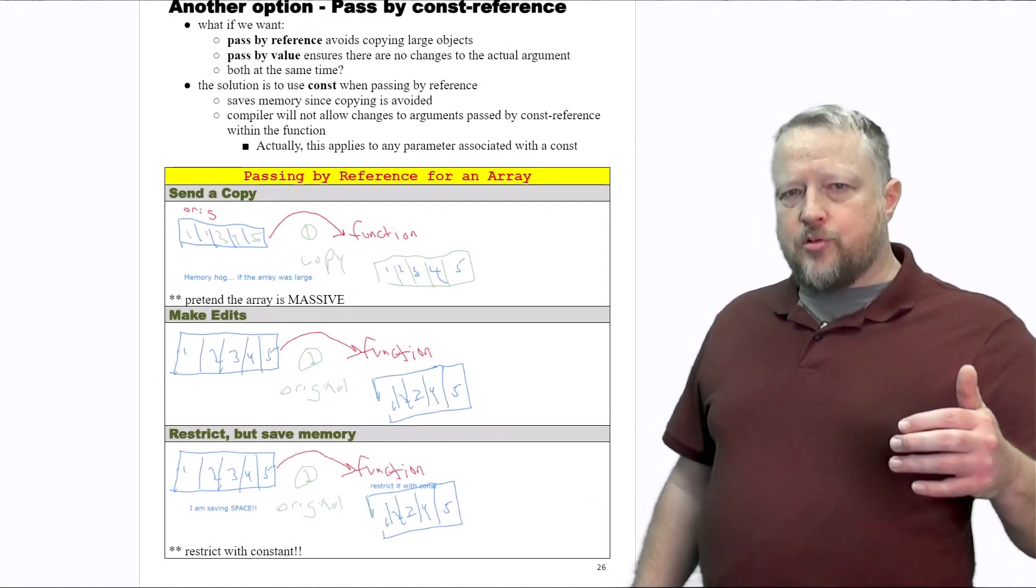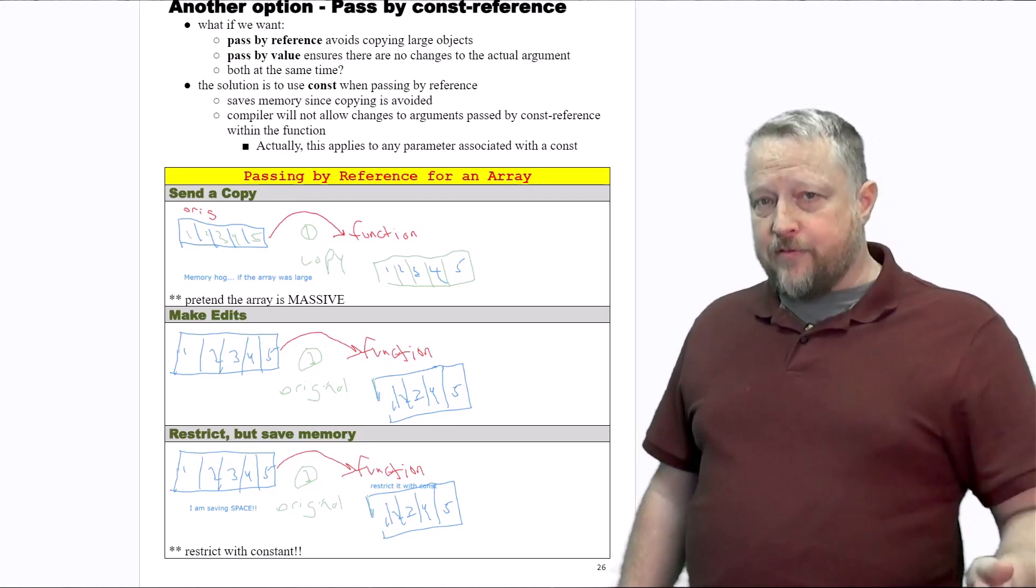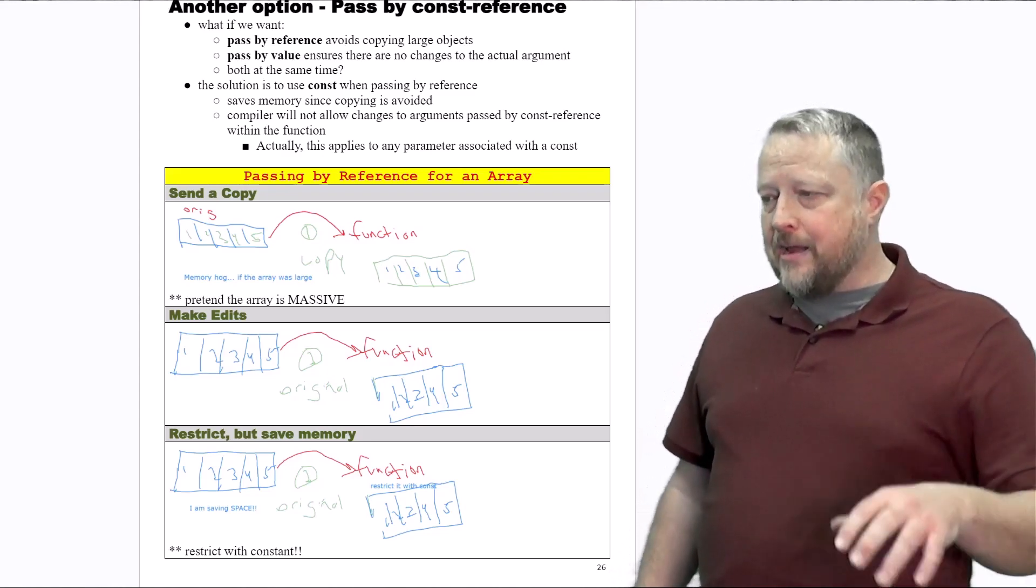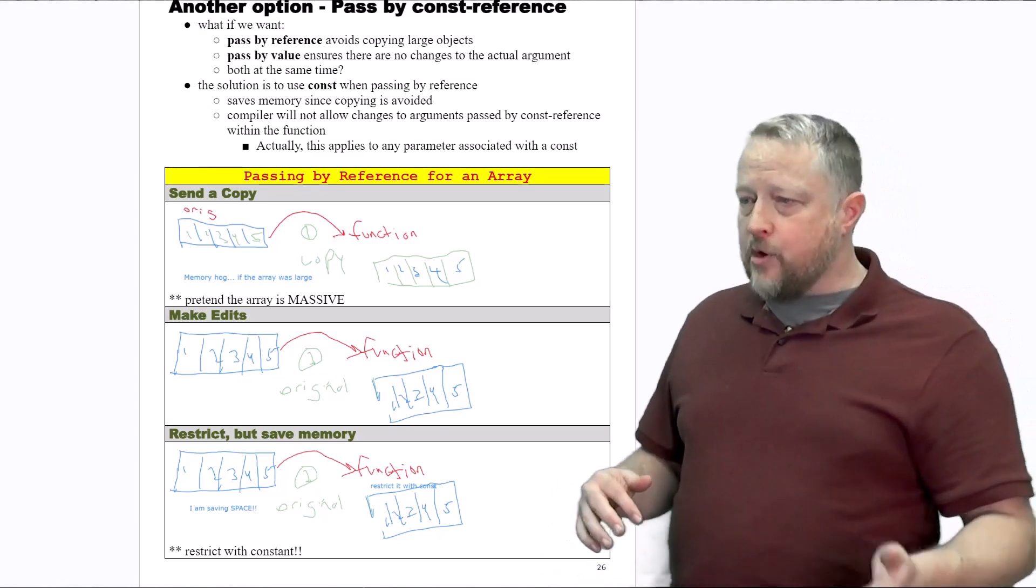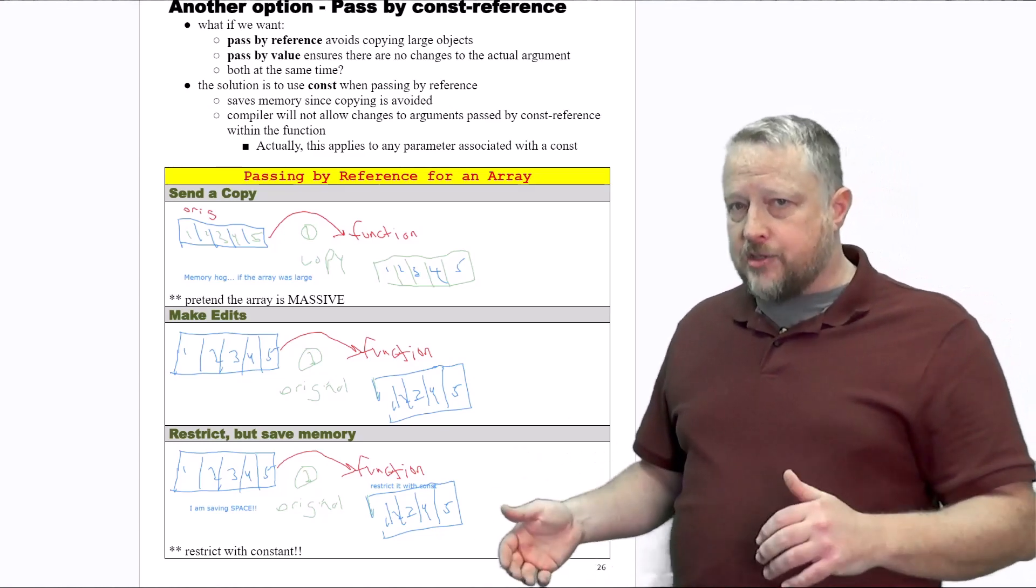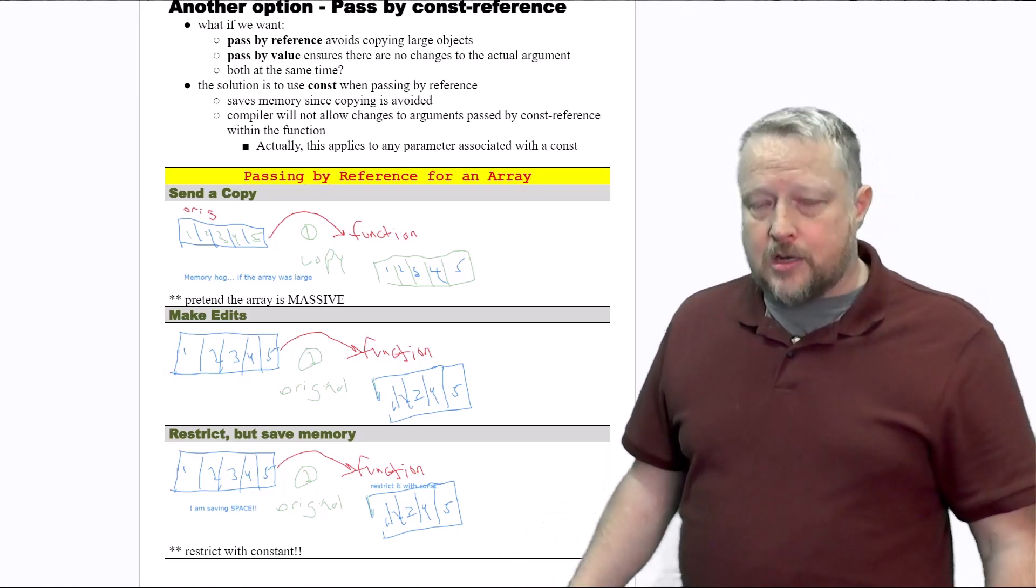So this gets back into talking about passing by reference or by constant. I've gone over, if you don't want the array to change, you put constant. If you do want the array to change, you just don't put constant.